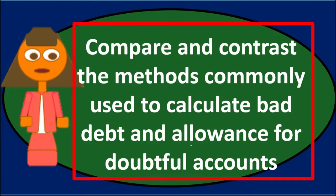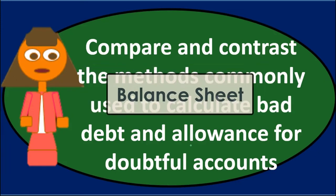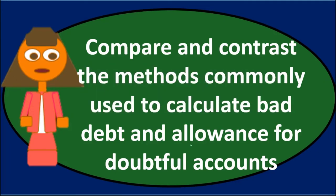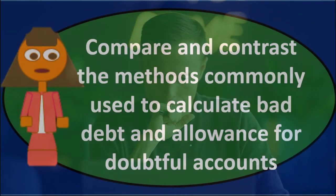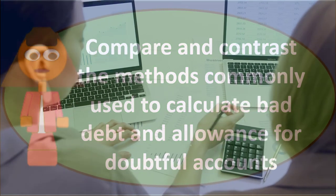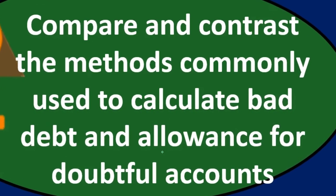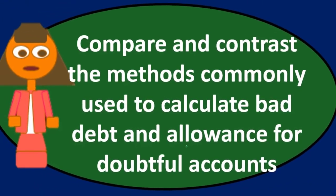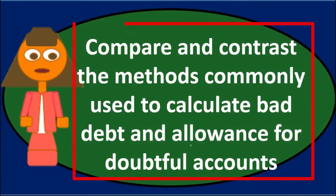The second method, the percentage of sales method, focuses more on the income statement, with the balance sheet fixing itself as a result. If our focus is on the matching principle — matching revenue with related expenses — then the percentage of sales method makes more sense. The problem it solves is that revenue is overstated because we recorded sales for which we may not get paid.